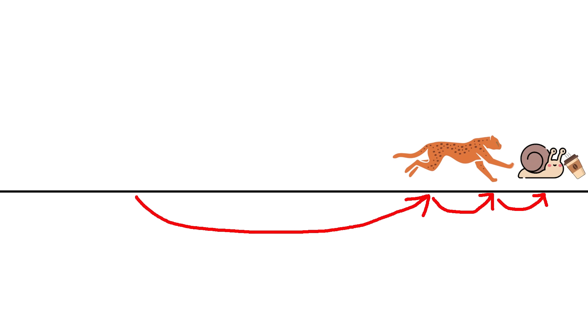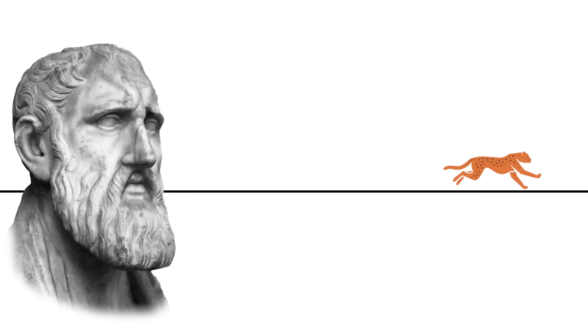Every time that the cheetah reaches the place where the snail was, the snail has had enough time to get a little bit further. And so the cheetah has another run to make. Zeno concludes that the cheetah has an infinite number of catch-ups to do before it can catch the snail. And so the cheetah never catches the snail.